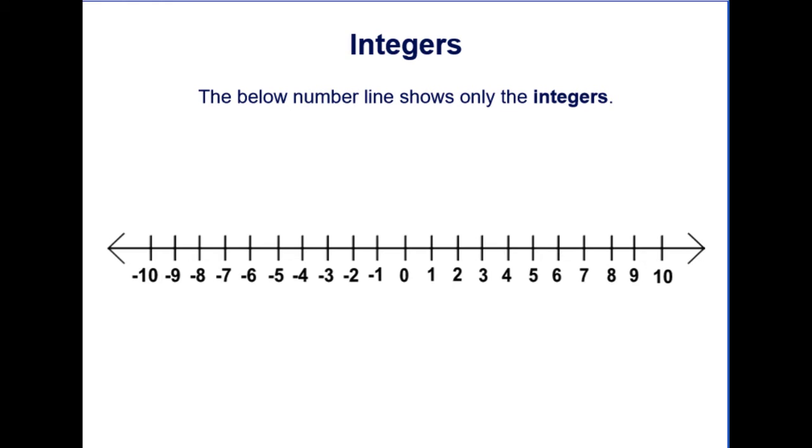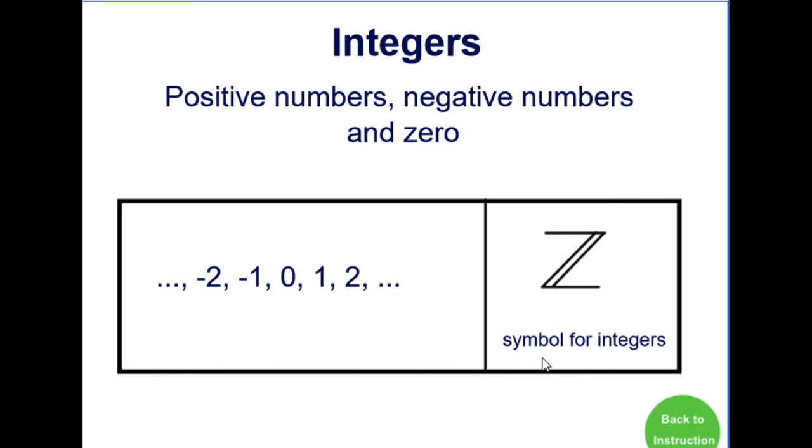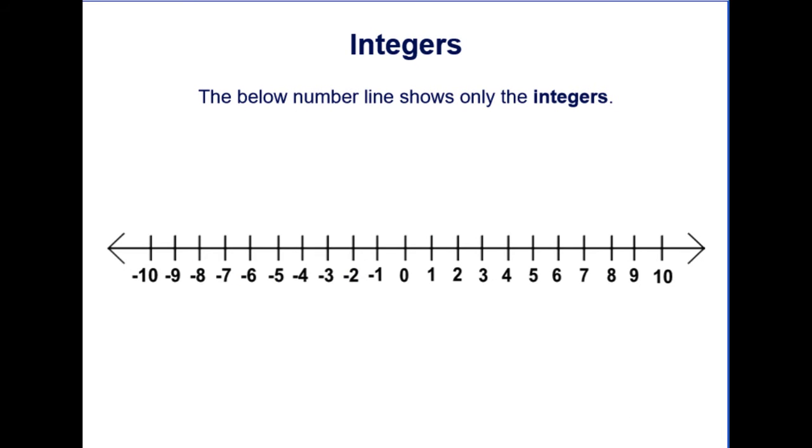This number line below shows only integers. Now remember, integers are positive numbers, negative numbers, and zero. So here we have positive numbers here to the right, zero, and then negative numbers to the left.